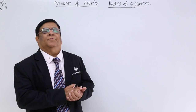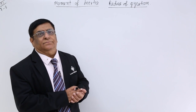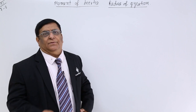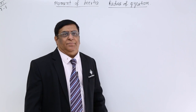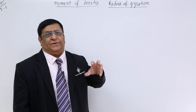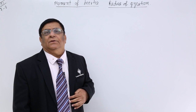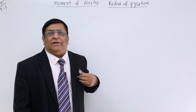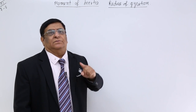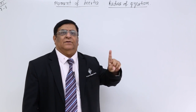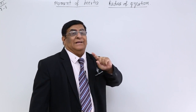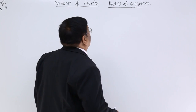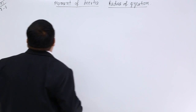A rotating system of particles has a geometrical shape. If that shape is a circle or sphere, it has a radius — that is the radius of that geometrical shape, which we call the geometrical radius. Now if we have a ring...